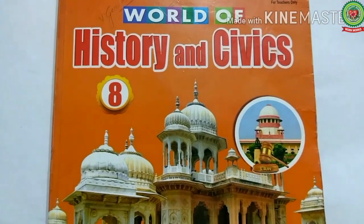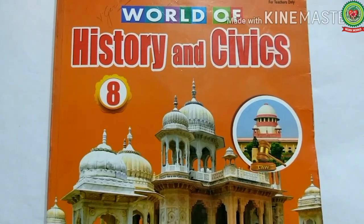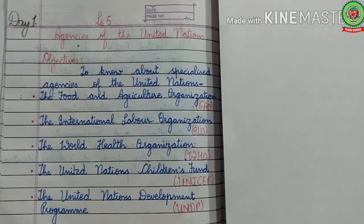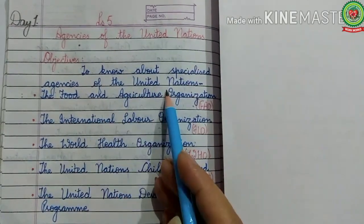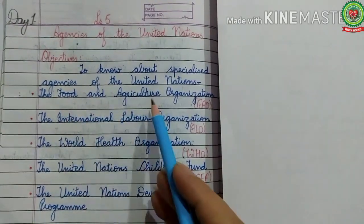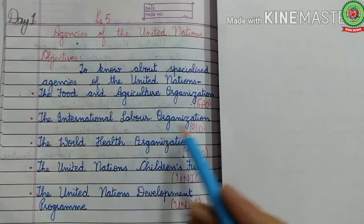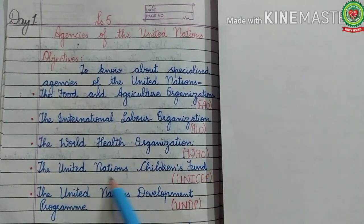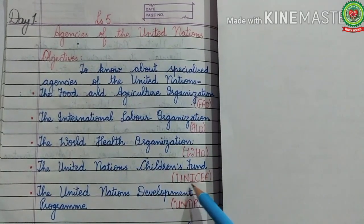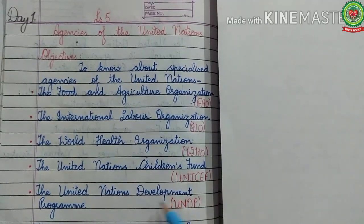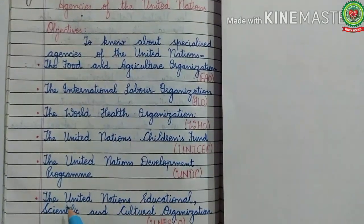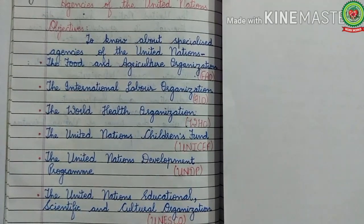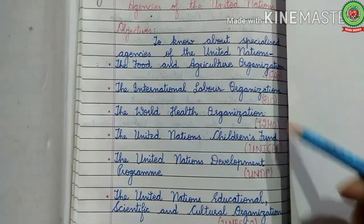Hello everyone. Open your History and Civics book, Class 8, Lesson 5: Agencies of the United Nations. The main objectives of the lesson are: you will come to know about the specialized agencies of the United Nations. These include the Food and Agriculture Organization (FAO), the International Labour Organization (ILO), the World Health Organization (WHO), the United Nations Children's Fund (UNICEF), and the United Nations Development Programme (UNDP).